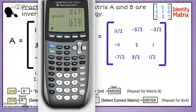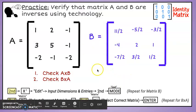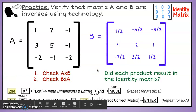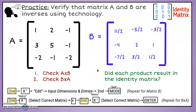Are these two matrices inverses? Yes, they are. Each product resulted in the identity matrix.